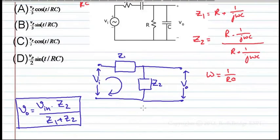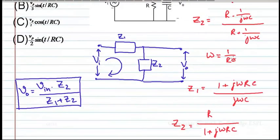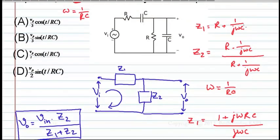So Z1 is what? Omega is 1 by Rt. Z1 is equal to 1 plus j omega Rt by j omega C. Take the denominator and simplify this: 1 plus j omega Rt by j omega C. And this is R by R plus R by 1 plus j omega Rt.